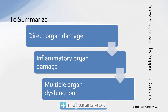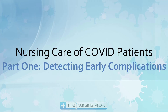To summarize, we have direct organ damage occurring as a result of this virus, inflammatory organ damage occurring secondary to the systemic inflammatory response, and then that can lead to multi-organ dysfunction and long-term complications of COVID-19. This is the piece we think we can have some influence on — we can't do a lot yet about stopping the virus once it gets in the body, but we can help control that inflammatory organ damage by slowing the progression, and then hopefully we're not getting as much multi-organ dysfunction. Thank you for joining me for Nursing Care of COVID Patients Part 1: Detecting Early Complications.